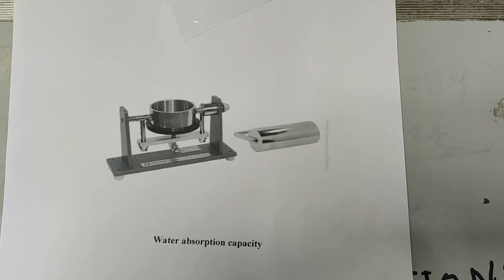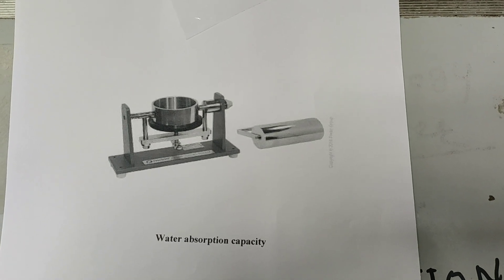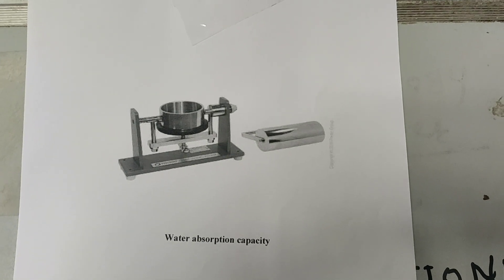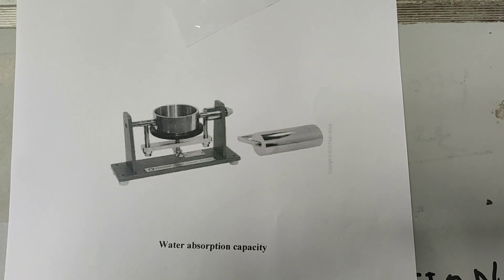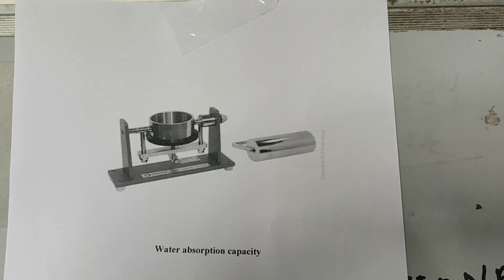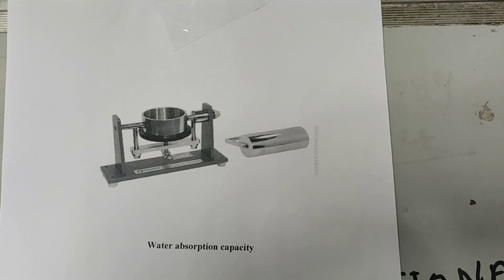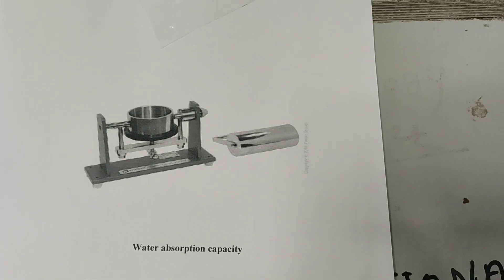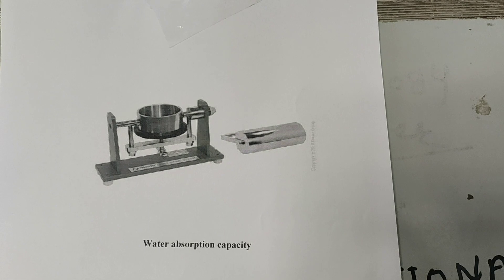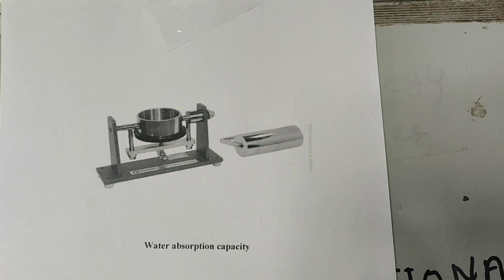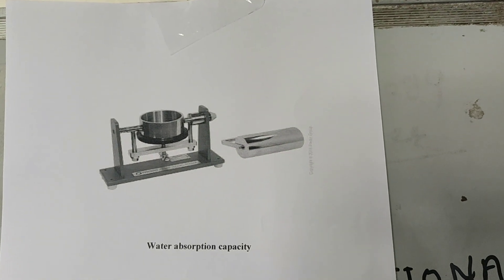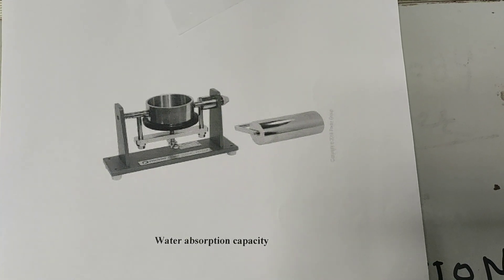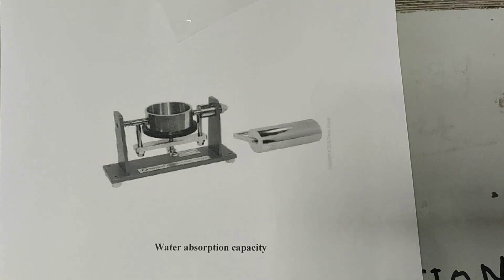The specimen holder consists of a metal cylinder of 10 cm inside diameter. The cylinder is placed or clamped over the specimen paper, which is supported by a rubber mat with a flat metal base. Water is then added with a measuring cylinder to a column height of 0.5 to 1 cm.